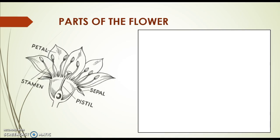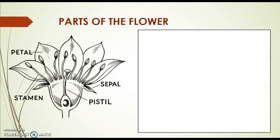And now let's have a look at the parts of the flower. In the flower it takes part their reproduction function. So we're going to have a look at the picture. You can see the different parts of the flower, the petal, the sepal, the pistil, and the stamen.